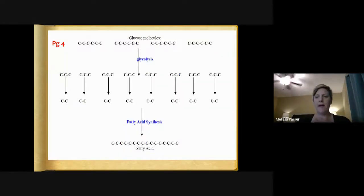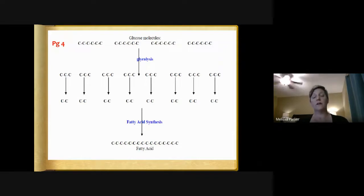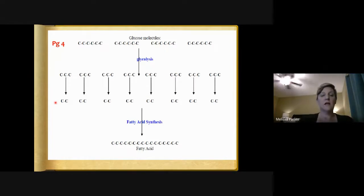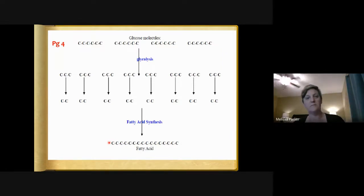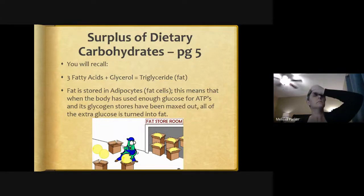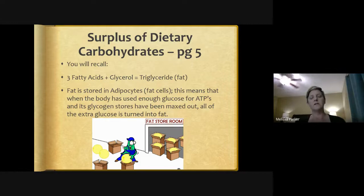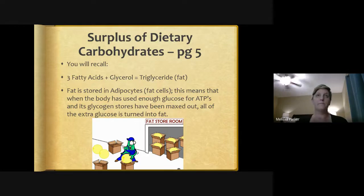This is the metabolic map we've used before: we start with glucose molecules — those six-carbon chains — that go through glycolysis to yield pyruvates, three-carbon chain molecules. With oxygen, those pyruvates are changed into acetyl groups. Through fatty acid synthesis, acetyl groups can be changed into a fatty acid. This is actually reverse beta oxidation, because beta oxidation takes the fatty acid and converts it into acetyls, while reverse beta oxidation takes acetyls and changes them into fatty acids.